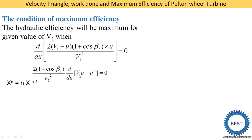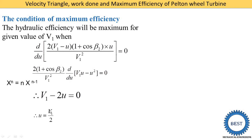Differentiating using the power rule — d/dU of V1*U gives V1, and d/dU of U² gives 2U — so the result is V1 minus 2U equals 0. Setting this equal to zero for maximum, we conclude that U equals V1/2. This is the condition for maximum efficiency.